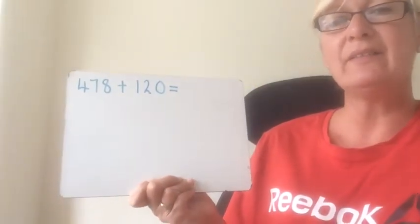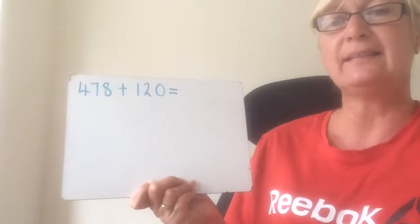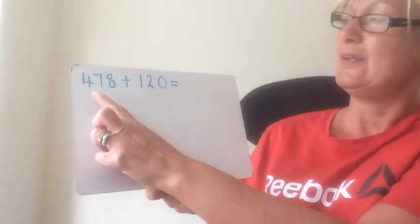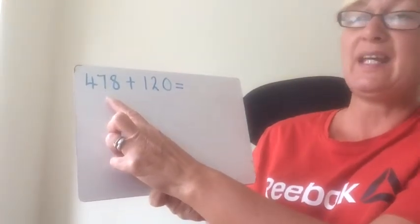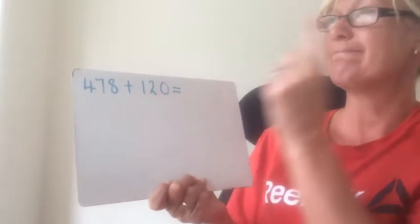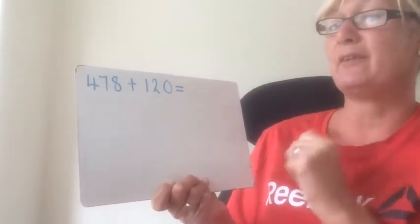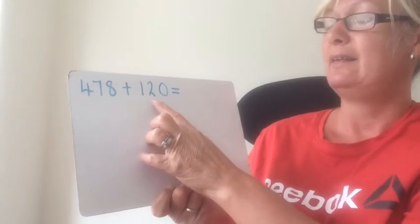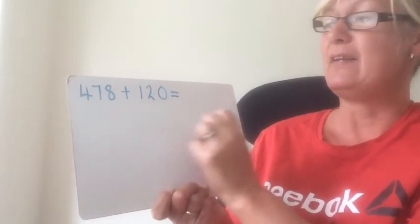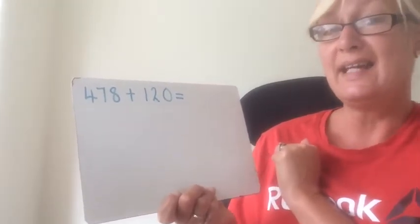So one way to do it is to count on the hundreds, then the tens, then the ones. So 478 add a hundred would be 578. Then add the twenty, 598.